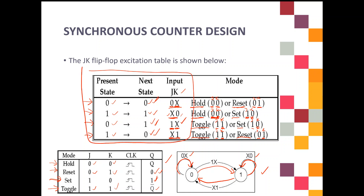You must remember the JK flip-flop excitation table. For example, when the present state value is 0, you must remember what the input of J and K should be — that is what you need to recall from this table.